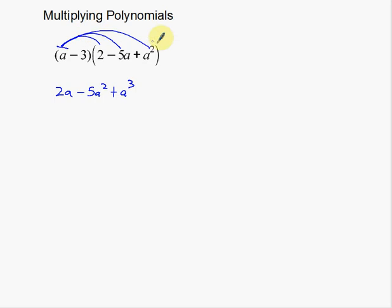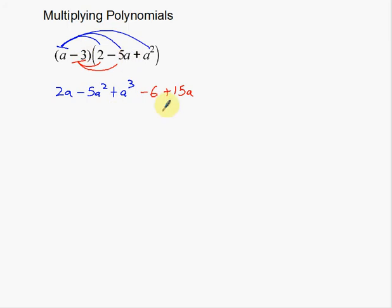Different teachers call these different things — some call them rainbows, some call them arcs. I'll show them here so you can keep track of what multiplications you're doing. The second multiplication is taking negative 3 times everything inside. So negative 3 times 2 is negative 6, negative 3 times negative 5 — be careful with double negatives — is positive 15a, negative 3 times negative 5a gives positive 15a, and negative 3 times a squared is negative 3a squared.